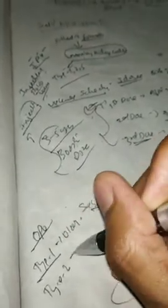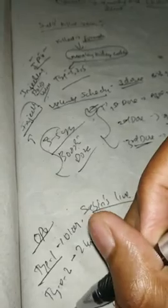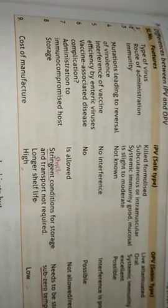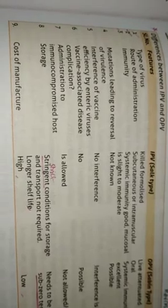In India, the content of one OPV dose contains approximately 10 lakh units for type one virus, 2 lakh units for type two, and 3 lakh units for type three.